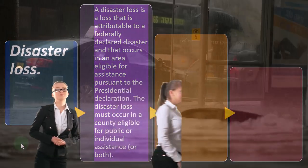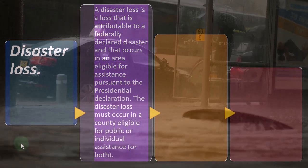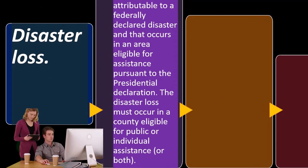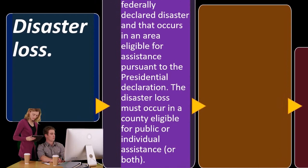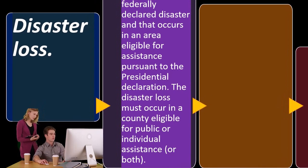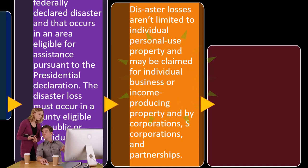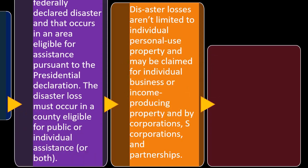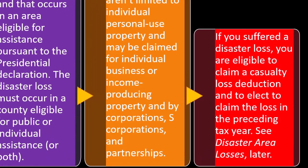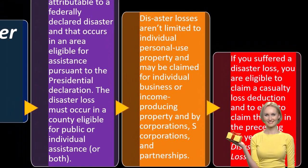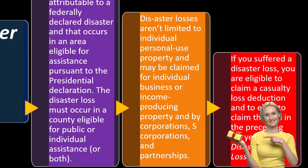Disaster loss: a disaster loss is a loss attributable to a federally declared disaster that occurs in an area eligible for assistance pursuant to the presidential declaration. The disaster loss must occur in a county eligible for public or individual assistance, or both. Disaster losses aren't limited to individual personal use property — they may be claimed for individual business or income-producing property, and by corporations and partnerships. If you suffered a disaster loss, you are eligible to claim a casualty loss deduction and to elect to claim the loss in the preceding tax year.